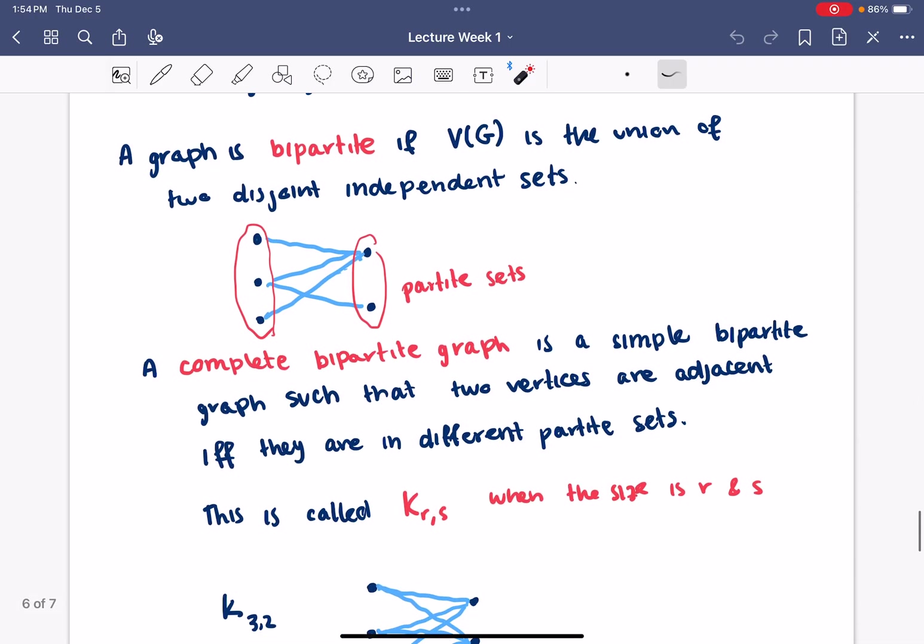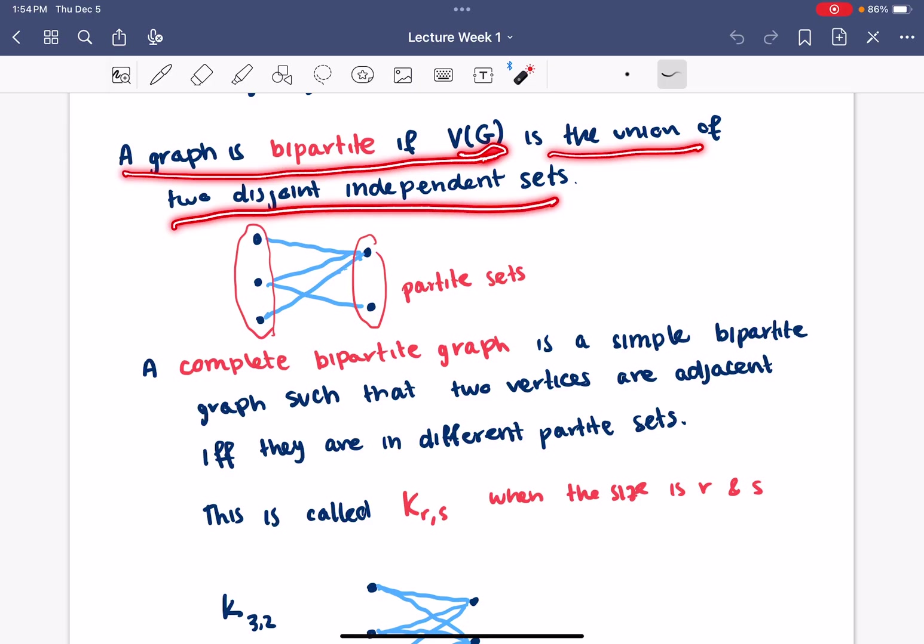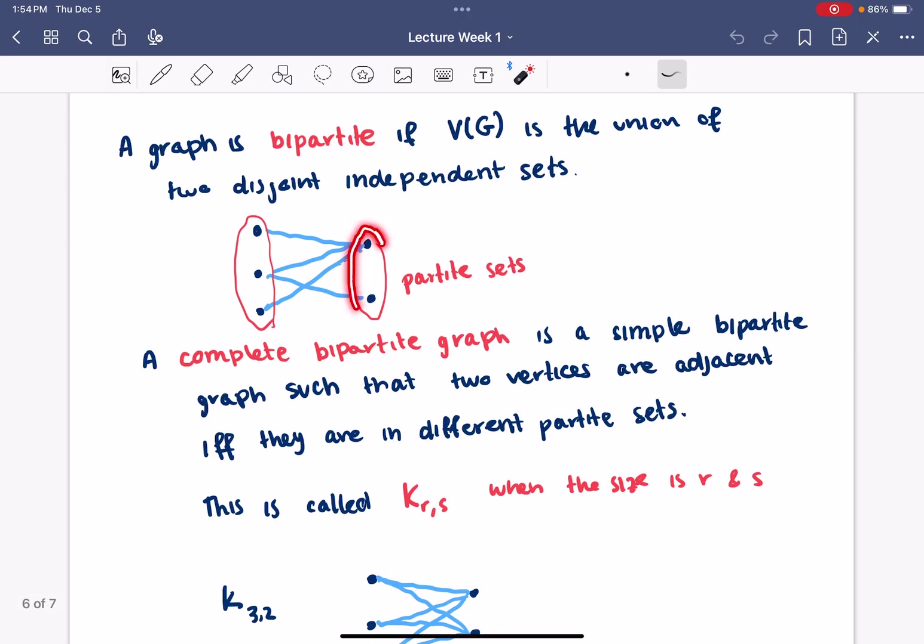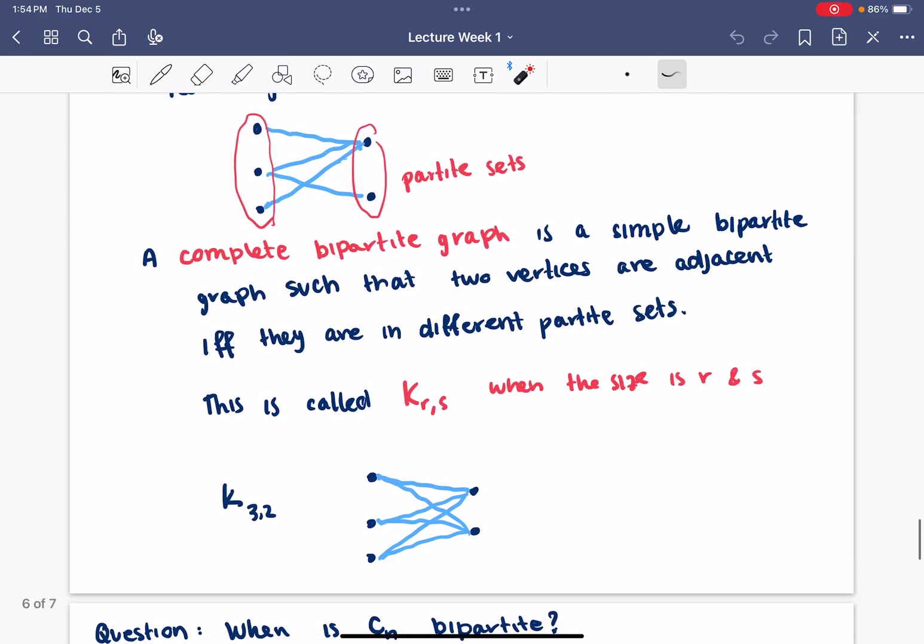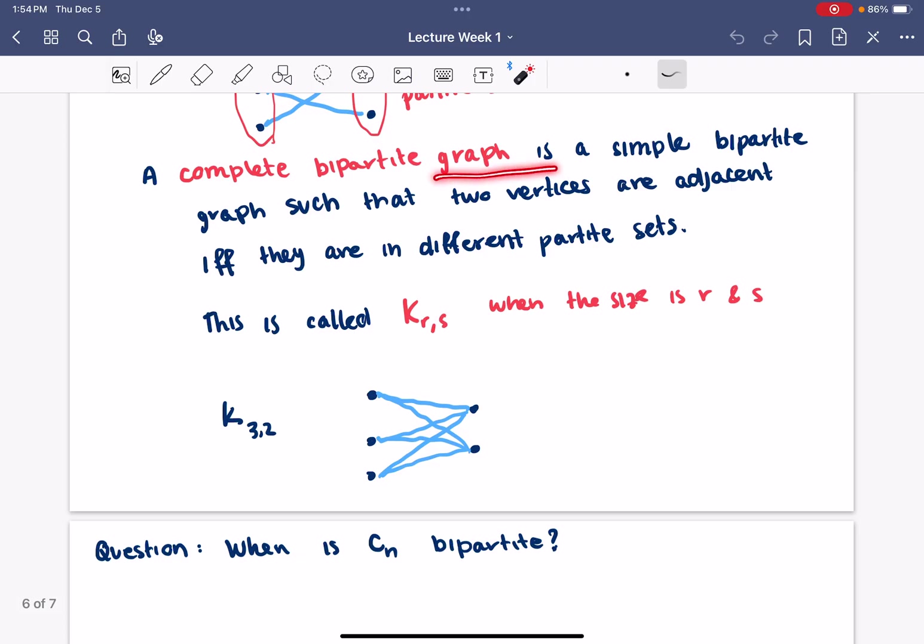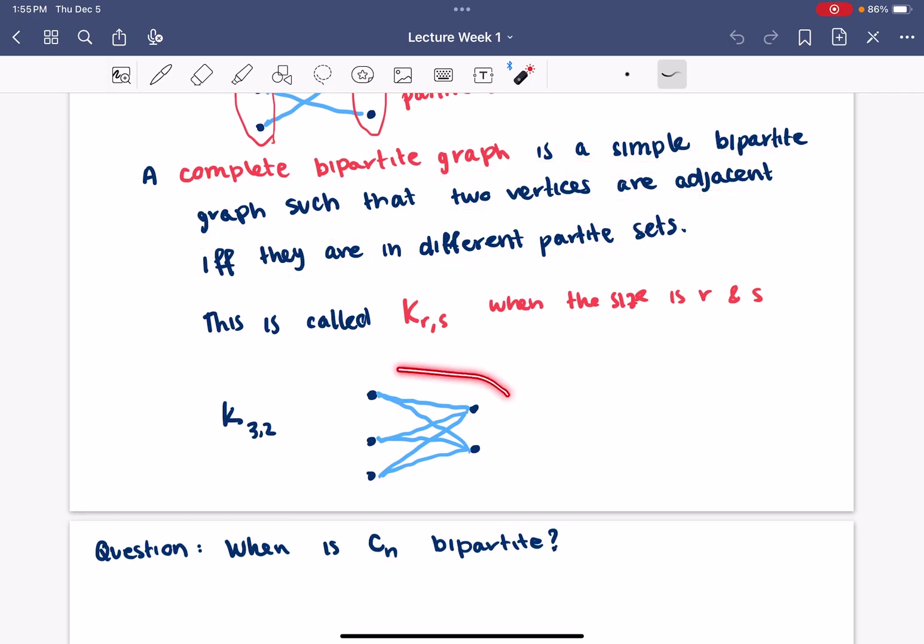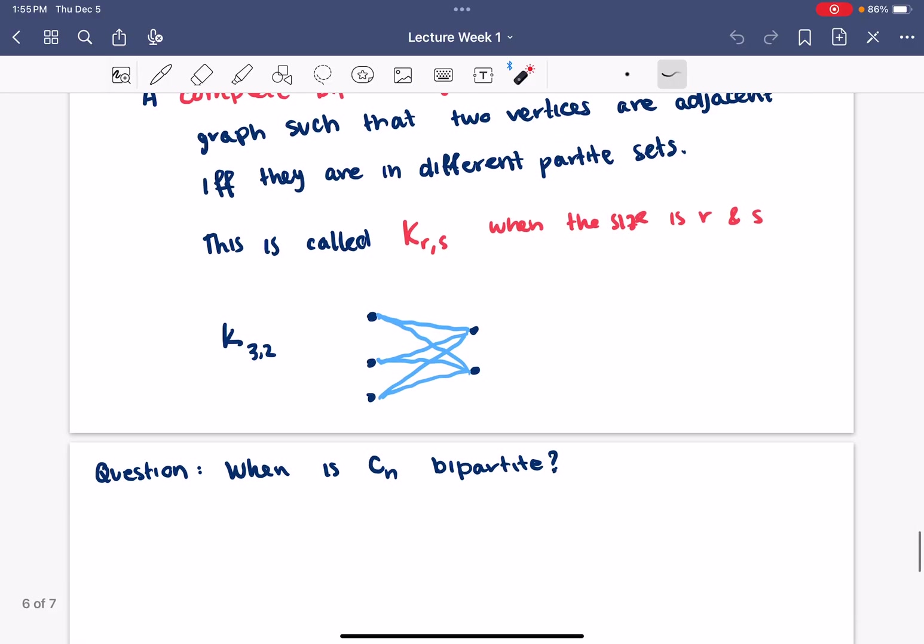We also say a graph is bipartite if the vertex set is the union of two disjoint independent sets. I can break up the vertex set into two sets - these are called partite sets - such that within each partite set, I have no edges. In other words, all of the edges of the graph are passing between these two sets. A complete bipartite graph is a simple bipartite graph such that two vertices are adjacent if and only if they're in different partite sets. That would look something like this. Then, we ended thinking about a question: when is the cycle C sub N bipartite?